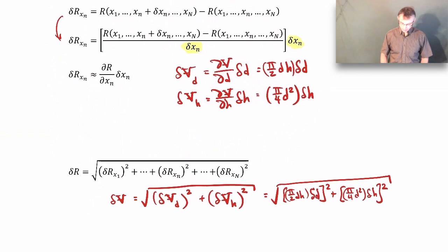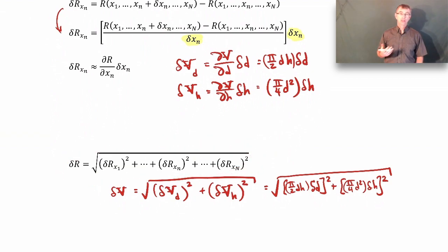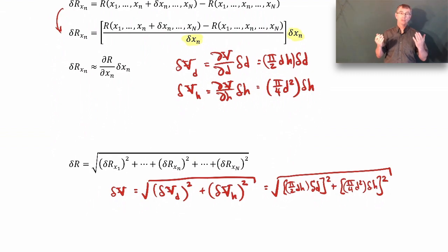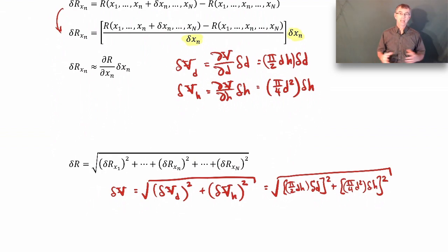One important thing to point out is that uncertainties add together — they don't subtract out. If you have some uncertainty in the diameter and some uncertainty in the height, those uncertainties add together. The more uncertainty you have in your parameters, it just grows and grows because they always add together.